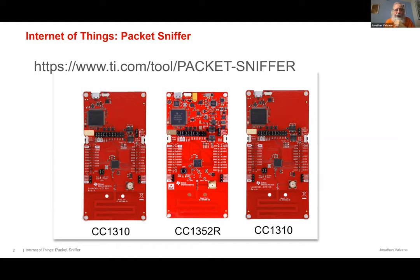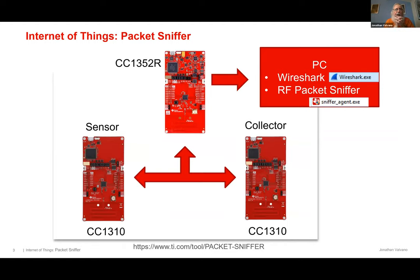The application is essentially one of the Lab 1 setups — a personality network. On the bottom two LaunchPads I have Lab 1 running with a sub-GHz channel zero communication from the sensor to the collector. The collector is the master of the architecture — the PAN coordinator. You can have multiple sensors creating a star network, but my star is simple: one collector and one sensor.